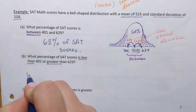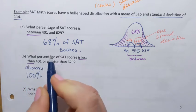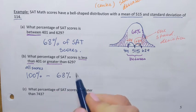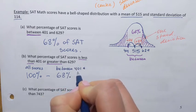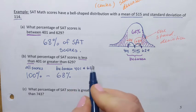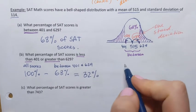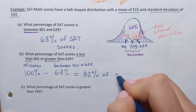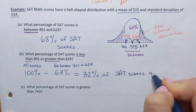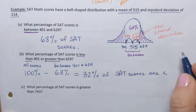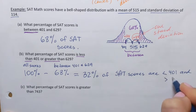So I take 100%, which represents all scores, and subtract 68%, which are the scores between 401 and 629. That gives 100 minus 68 = 32%. So 32% of SAT scores are less than 401 or greater than 629.